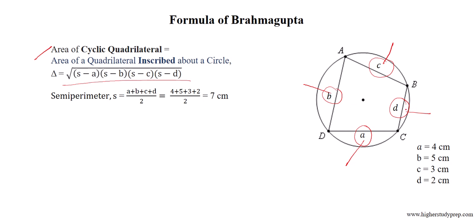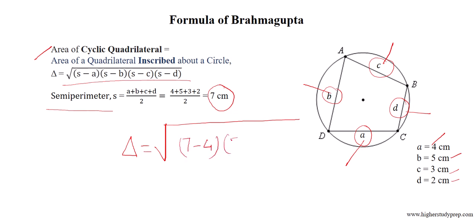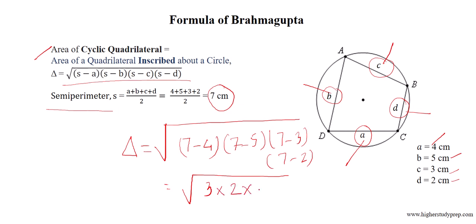For cyclic quadrilateral ABCD, the four side lengths are 4, 5, 3, and 2 centimeters respectively. Therefore the semi-perimeter equals 7 centimeters. The area equals the square root of (7−4)(7−5)(7−3)(7−2), which equals the square root of 3 times 2 times 4 times 5, equals the square root of 120, which results in 2 times the square root of 30 square centimeters.